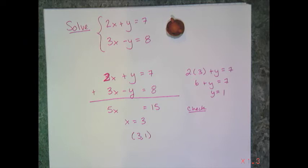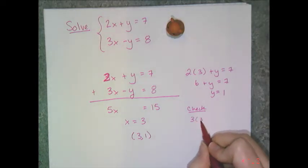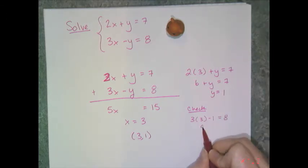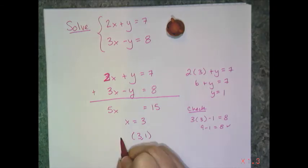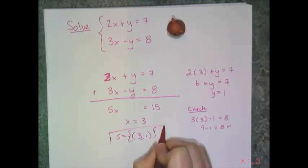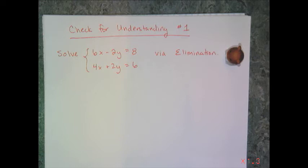I know (3, 1) works with the first equation, so now I need to check it with the second one. So 3 times 3 minus 1 — is that equal to 8? And yes, it is. So my solution is indeed the point (3, 1). That's how elimination works: you add the two equations so one of the variables drops off. Now it's your turn — solve the system 6x minus 2y equals 8 and 4x plus 2y equals 6 using elimination.